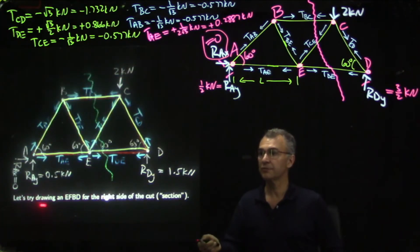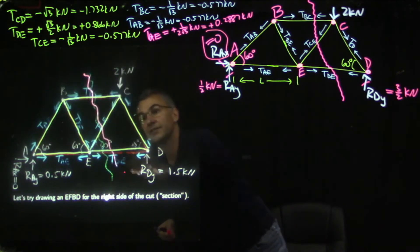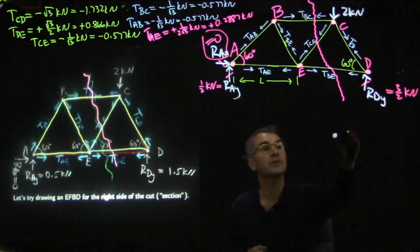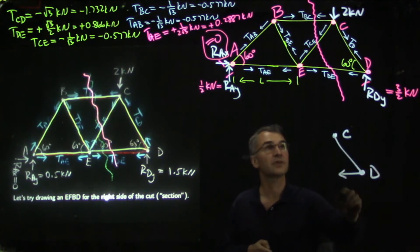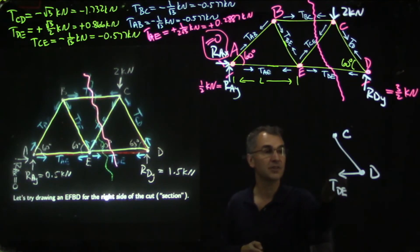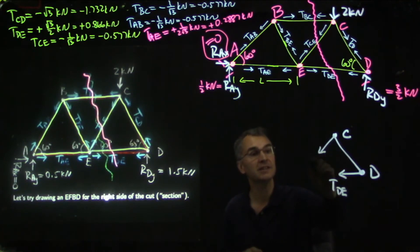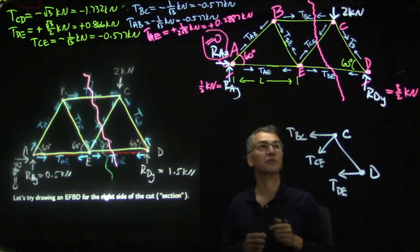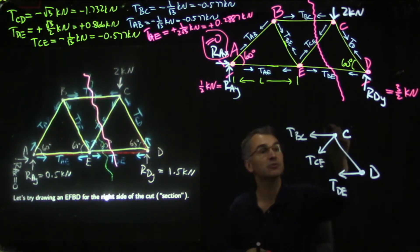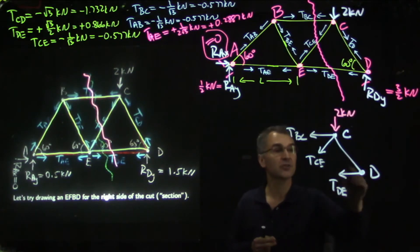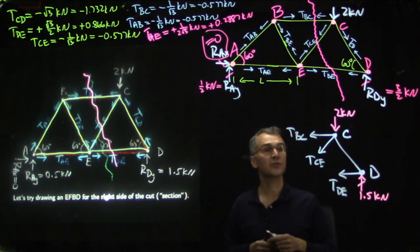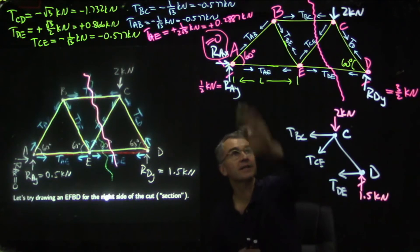We are going to draw an extended free body diagram for the right side of the cut. Here is joint C and joint D, and we draw: T-DE pulling to the right on what remains, T-CE pulling down and to the left, and T-BC pulling to the left on joint C. We must not forget the two kilonewton load and the 1.5 kilonewton reaction force. Those are all the external forces on the piece that was not erased.